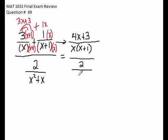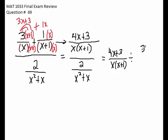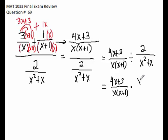The numerator of this would be 3x plus x, which is 4x plus 3, over x times x plus 1. The denominator is already one fraction, so we keep that the way it is. Now it's a division problem. 4x plus 3 over x times x plus 1, divided by 2 over x squared plus x. Keep the dividend and multiply by the inverse of the divisor.